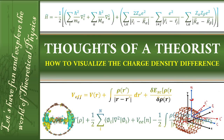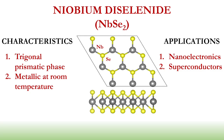In this tutorial, we will be using a transition metal dichalcogenide which we call niobium diselenide. This contains one niobium atom and two selenide atoms forming the transition metal dichalcogenide structure. Niobium diselenide has a trigonal prismatic phase and is naturally metallic at room temperature.